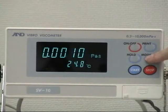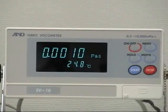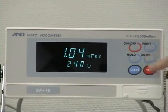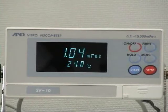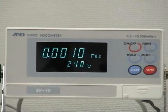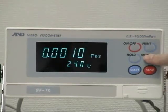Press the mode key to change the unit of viscosity between millipascal seconds and pascal seconds. Centipoise and poise can also be selected. Even in the hold function, the unit of viscosity displayed can be changed by pressing the mode key.